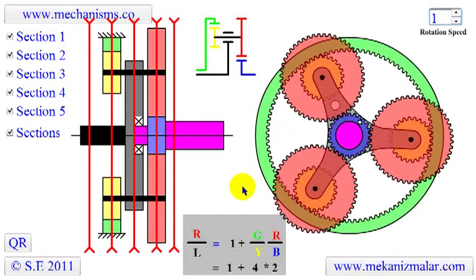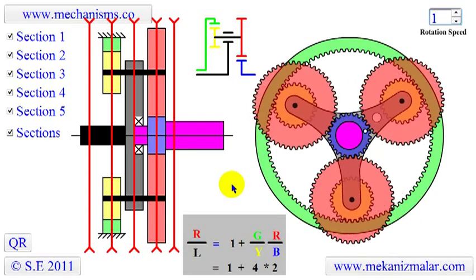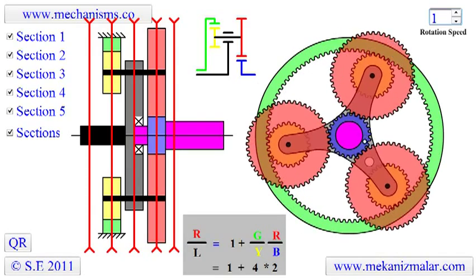As you can see, the rotation is 9. This concludes our presentation of a planetary gear system.